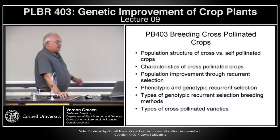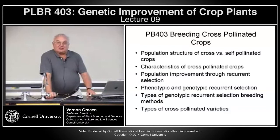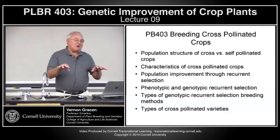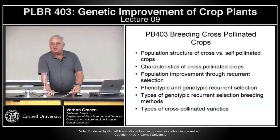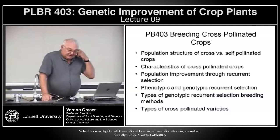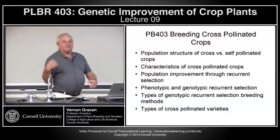We'll look briefly at the population structure of cross versus self-pollinated crops again. We'll talk about some characteristics of cross-pollinated plants, then the concept of population improvement through recurrent selection. I'll go through this in a very shallow and rapid view because later in November, Dr. Don Veyens will come in and give two weeks of excellent lectures on population improvement mechanisms. We'll talk about the types of selection you can do and then finish up with the types of cross-pollinated varieties.